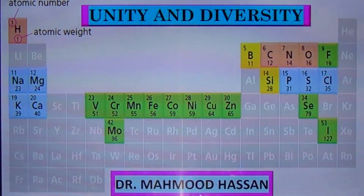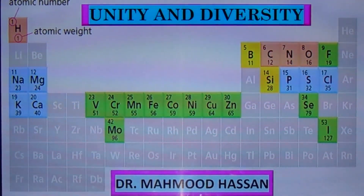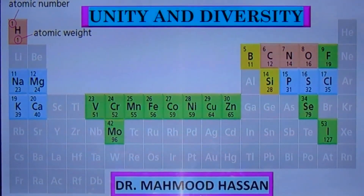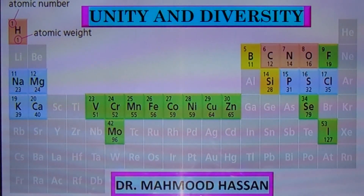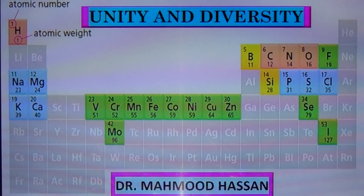We therefore classify all living organisms based on their similarities and dissimilarities. All similar organisms are placed in one group, away from the dissimilar ones. This lecture will provide you an introduction of both these themes while differentiating each other.